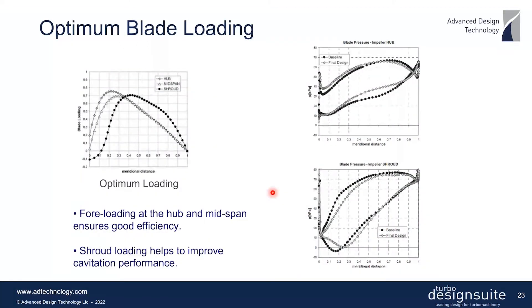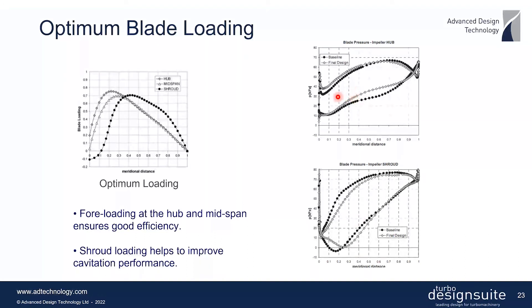To address this, they developed a novel loading distribution: at the hub and mid-span they use a front-loaded distribution, but at the shroud they unload the first 10% and then maintain an almost front-loaded distribution after that. The effect on surface static pressure shows that this removes the dip that was going below vapor pressure and causing cavitation at the shroud. The front loading at hub and mid-span is important for this mixed flow impeller as it rapidly diffuses the flow, ensuring low profile losses and relatively high efficiency.